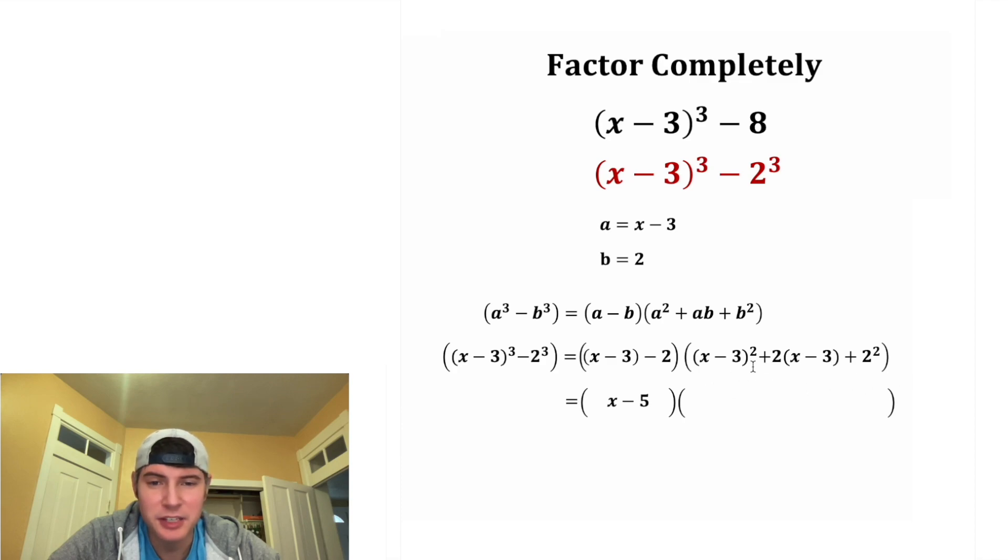And for the second parentheses, x minus 3 squared is x minus 3 times x minus 3, which is x squared minus 6x plus 9. Then we can distribute the 2 to both these terms, so we have 2 times x, which is 2x, and then 2 times negative 3, which is negative 6. And last, we're going to add 2 squared, which is 4.